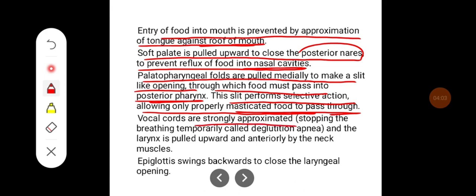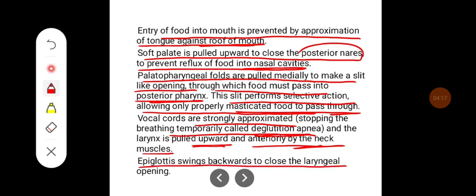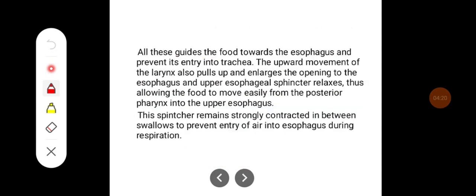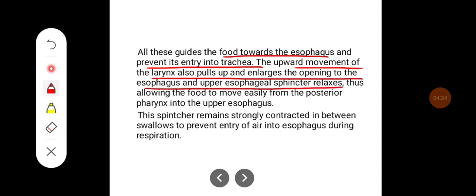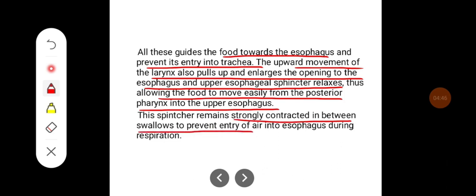The vocal cords are strongly approximated, temporarily stopping breathing — a process called deglutition apnea — and the larynx is pulled upward and anteriorly by the neck muscles. The epiglottis swings backward to close the laryngeal opening, guiding food toward the esophagus and preventing entry into the trachea. The upward movement of the larynx also enlarges the opening of the esophagus, and the upper esophageal sphincter relaxes, allowing food to move easily from the posterior pharynx into the upper esophagus. This sphincter remains strongly contracted between swallows to prevent entry of air into the esophagus during respiration.